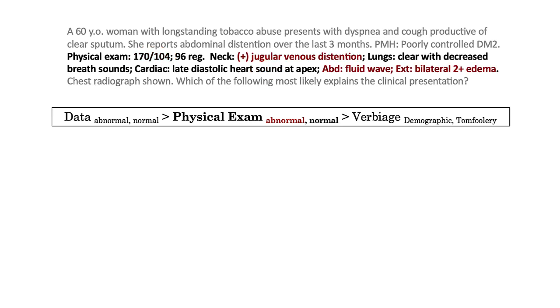And finally, we see evidence of ascites and peripheral edema, both of which must be on a hydrostatic basis given the presence of jugular venous distension. And with that, we can circle back to the answer options.